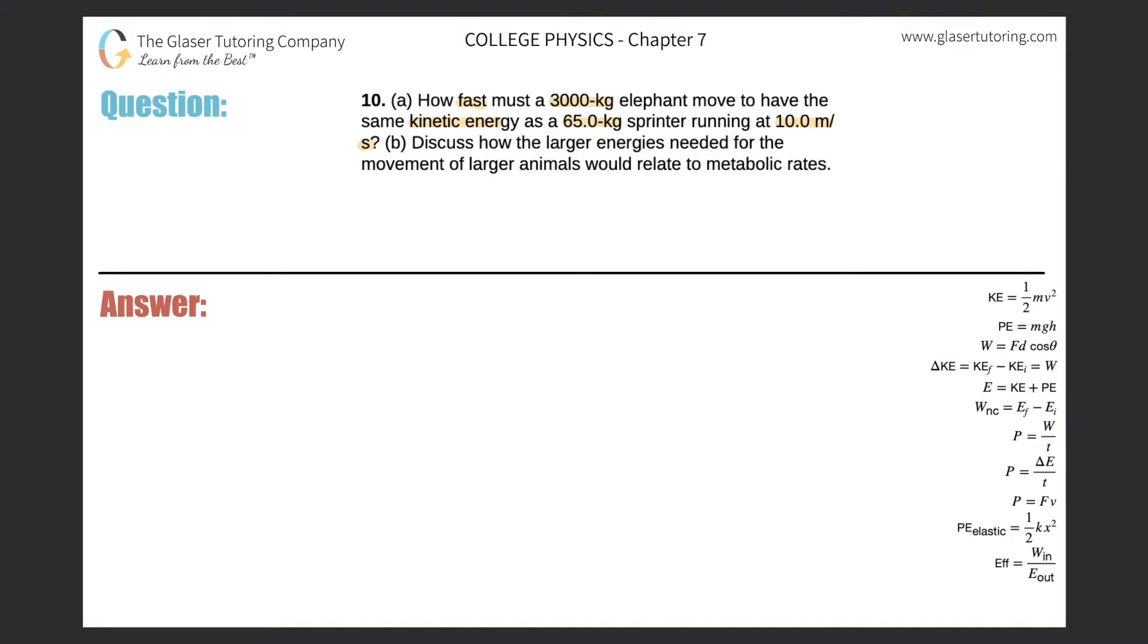All right, so first of all, they got to have the same kinetic energies. So I can start with a very simple equation that the kinetic energy of the elephant must equal the kinetic energy of the sprinter. And then we know that kinetic energy is equal to 1/2 mv squared.